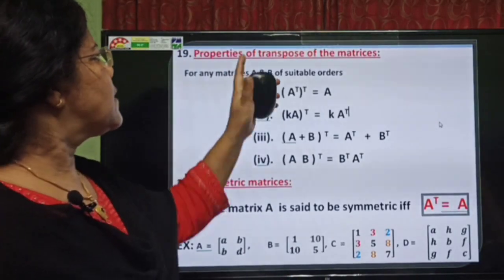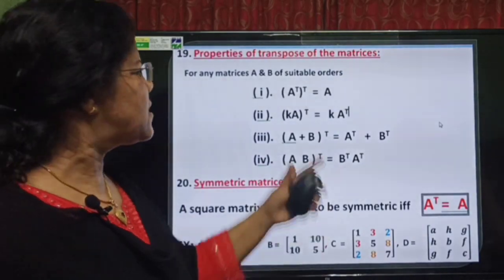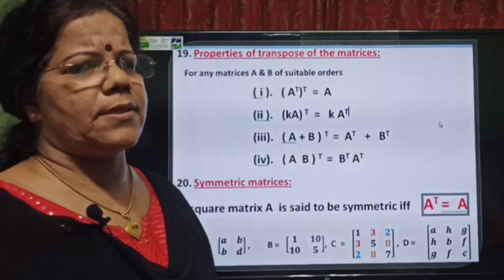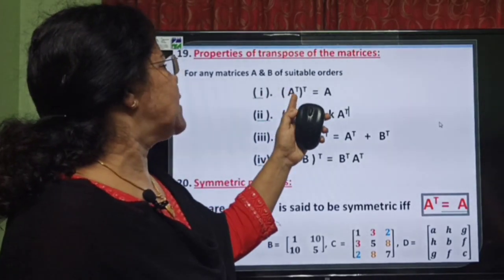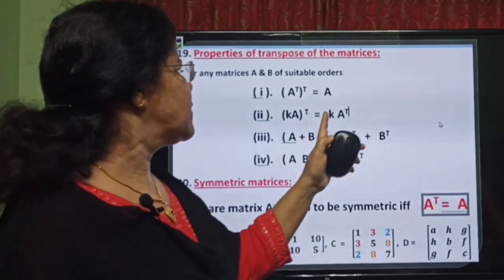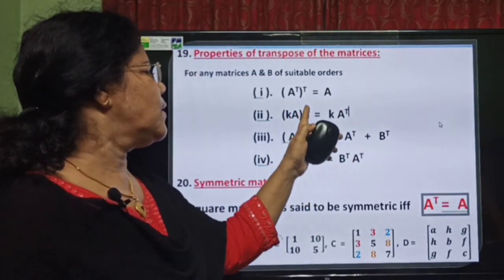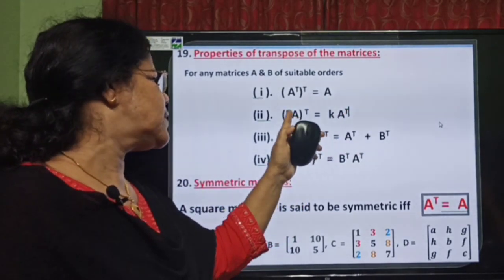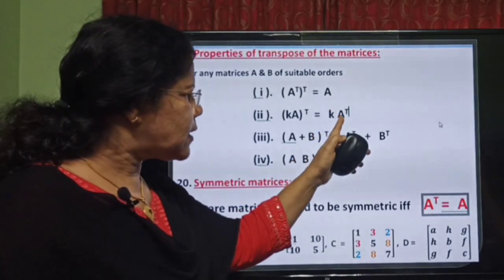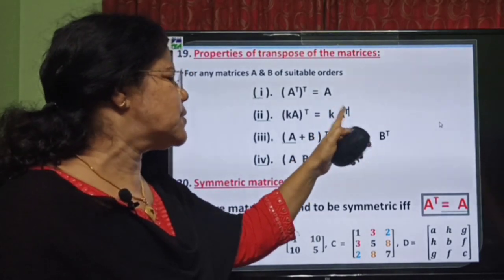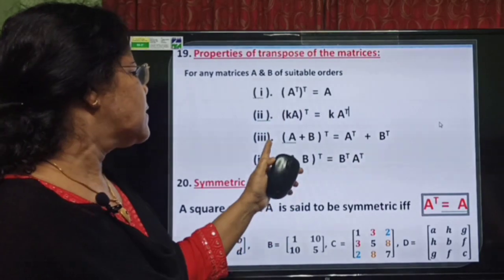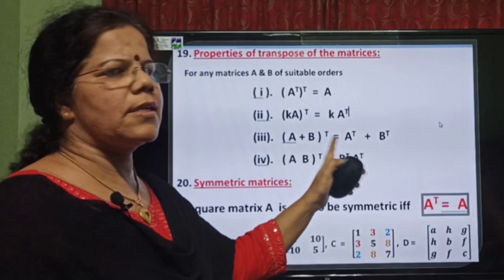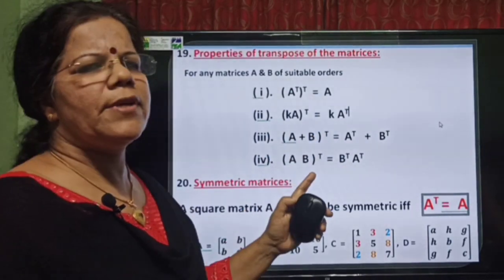Now there are properties of transpose of matrices — simple properties. All these properties can be verified using simple examples. First property: A-transpose whole transpose is equal to A. Second: K·A whole transpose is equal to K into A-transpose, that is, transpose of the matrix multiplied with the scalar equals the matrix transposed first, then multiplied with the scalar. Third: A plus B whole transpose is equal to A-transpose plus B-transpose.